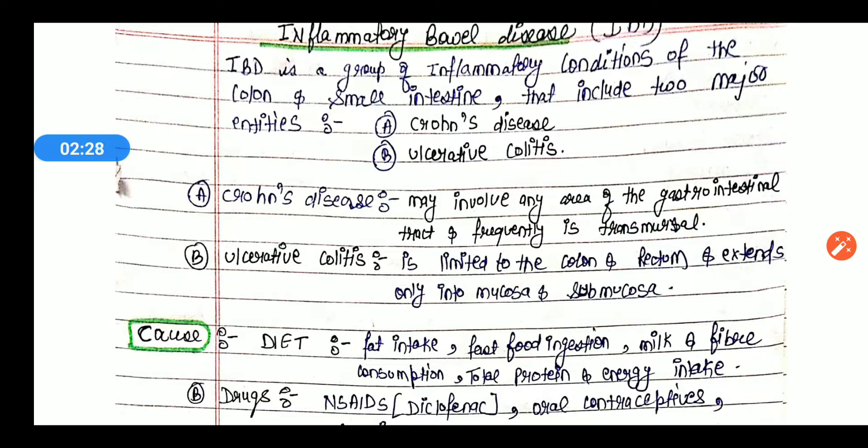So IBD, as you understand, is an inflammatory condition in the colon and small intestine. It has two major entities: first is Crohn's disease and second is ulcerative colitis. Both are inflammatory conditions, but Crohn's disease involves the entire GIT area in the inflammatory condition, whereas ulcerative colitis is limited to the colon and rectum and extends at most into the mucosa and submucosa. So this is the introduction of IBD.